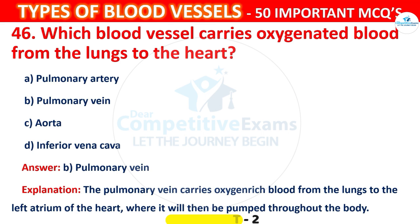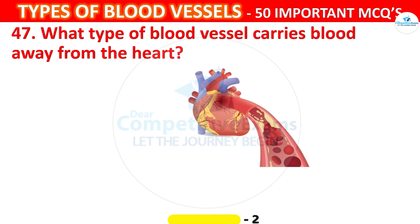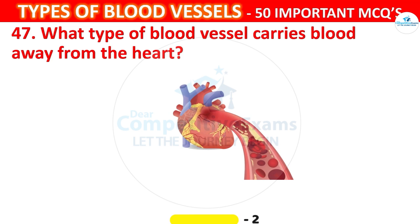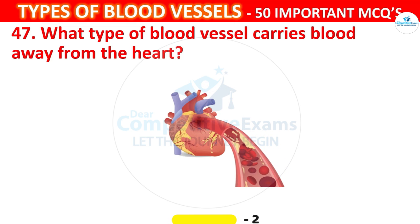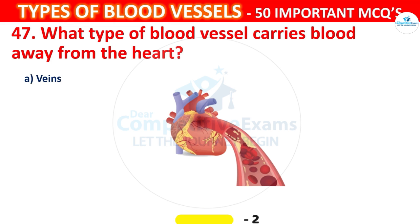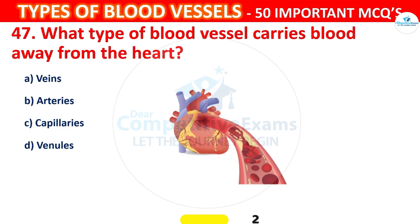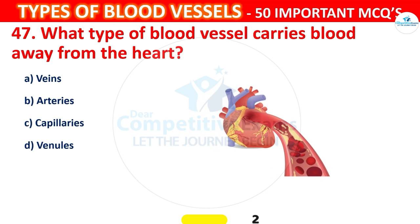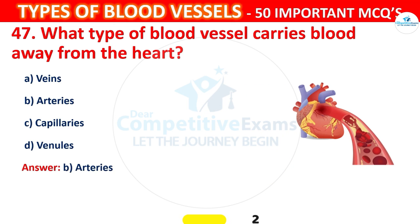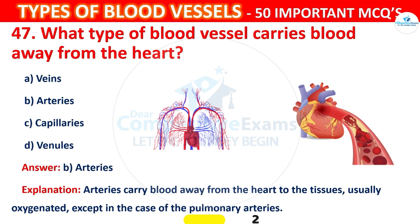Question 47. What type of blood vessel carries blood away from the heart? Options: Veins, Arteries, Capillaries, or Venules. The correct answer is B, Arteries. Arteries carry blood away from the heart to the tissues, usually oxygenated, except in the case of Pulmonary Arteries.